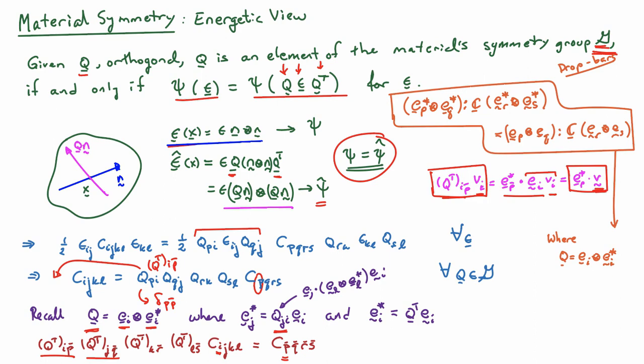What I see is that on the left hand side, I have EP star outer product EQ star double contract with C acting on ER star outer product ES star. Recall here that the symmetry element Q is written out in the special form EI outer product EI star.